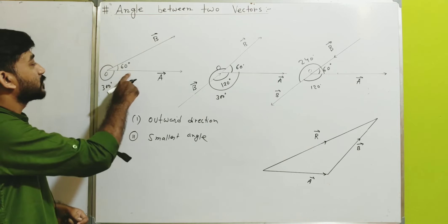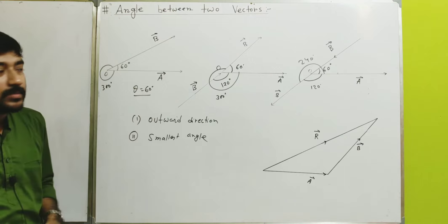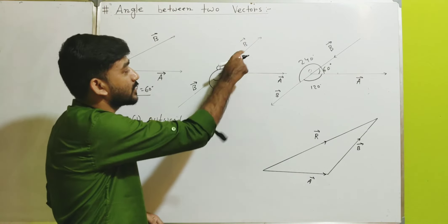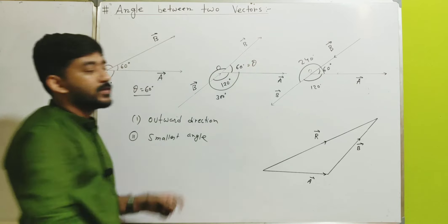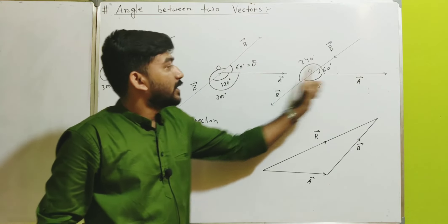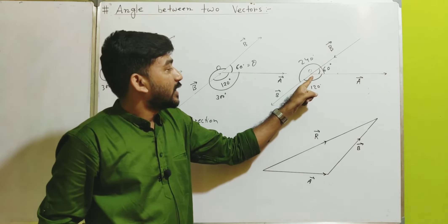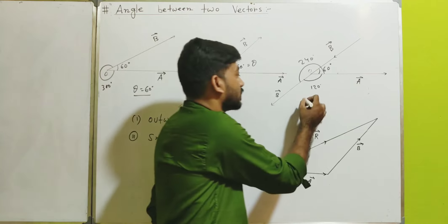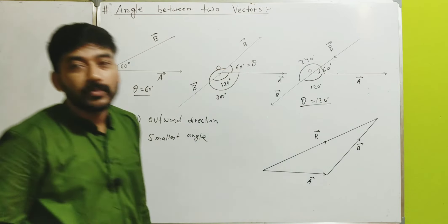Applying these rules: for the first figure, the smallest possible angle is 60 degrees, so theta equals 60 degrees. For the second figure, the two vectors are outwards and the smallest possible angle is also 60 degrees, so theta equals 60 degrees. But for the third figure, after making both vectors outward, the smallest possible angle is 120 degrees, so theta equals 120 degrees. That is the correct angle between the two vectors in each case.